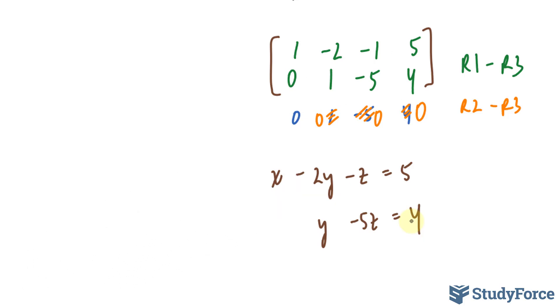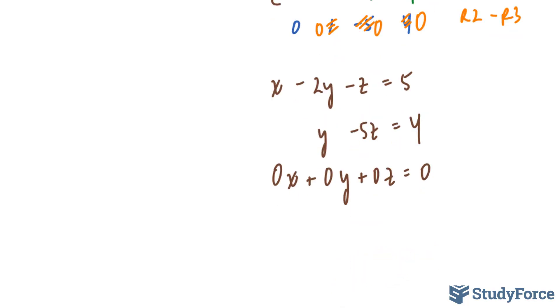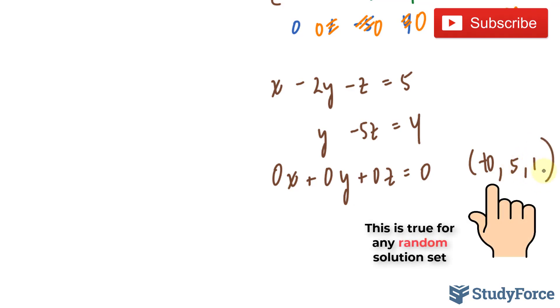The reason why this has an infinite number of solutions is because if you look at the third row which became all zeros, another way to understand that is by saying 0x plus 0y plus 0z is equal to 0. And anything you put into x, y, or z will result into 0. Think about it. If your solution set is negative 10, 5, and 1, you'll end up with 0. Therefore, there are an infinite number of solutions.